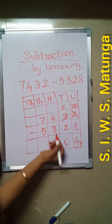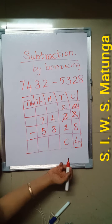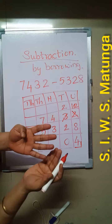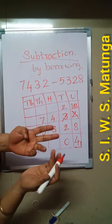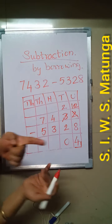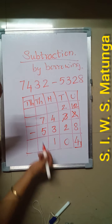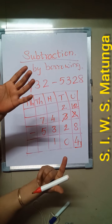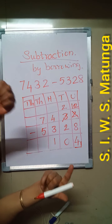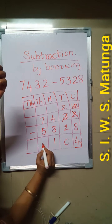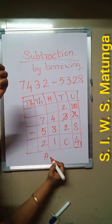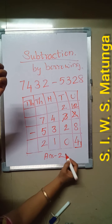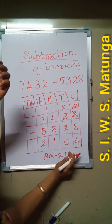Next, the hundreds place: 4 minus 3. Take 4 fingers — 3 minus 1 left, so the answer is 1. Then thousands place: 7 minus 5 equals 2. So the answer is 2, 1, 0, 4.